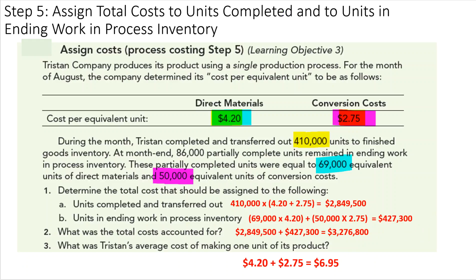Adding the two together: $2,849,500 + $427,300 = $3,276,800 total cost accounted for. The average cost of making one unit is found by adding the direct materials cost and conversion cost per unit together, giving $6.95.